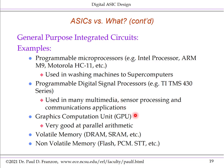Another example of a general-purpose integrated circuit is a graphics computation unit, or GPU. These are very good at parallel arithmetic. Memories also serve as a very broad category of general-purpose integrated circuits, such as volatile memory — dynamic RAM or static RAM — and non-volatile memory such as flash and phase change memory.